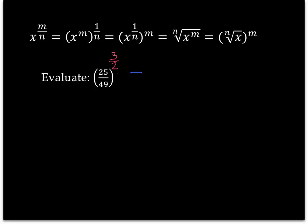Okay, welcome back. Here we go. So, this is the same thing as writing the second root, or the square root of 25 over 49, and then raising that to the power of 3.